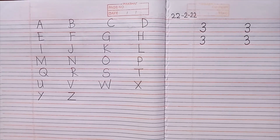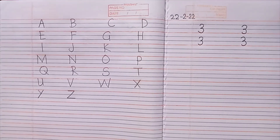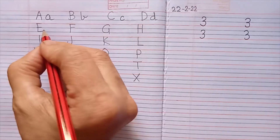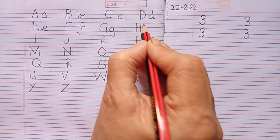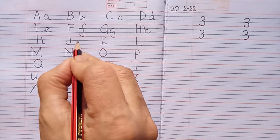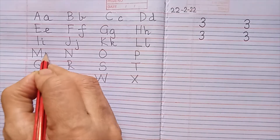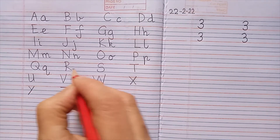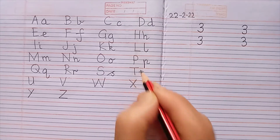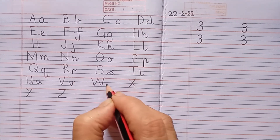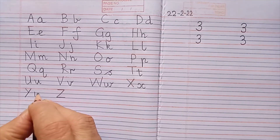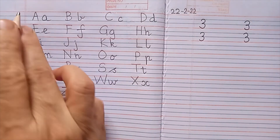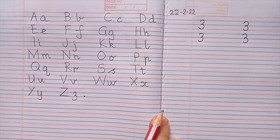Today we have learned the letter Z, which completes all our small letters. So let's recap: we have A, B, C, D, E, F, G, H, I, J, K, L, M, N, O, P, Q, R, S, T, U, V, W, X, Y — and today we have learned the letter Z. Now we finish it and put a full stop — that's the end! We have learned all our small letters and capital letters and written them next to one another.